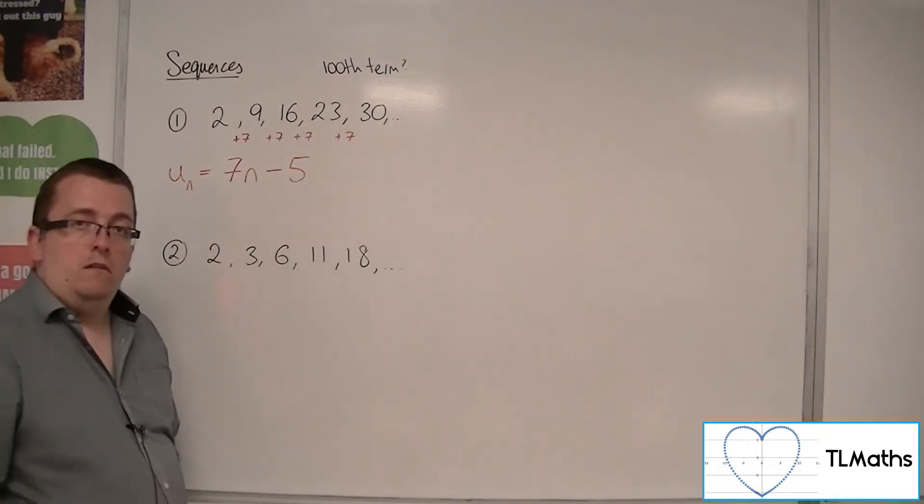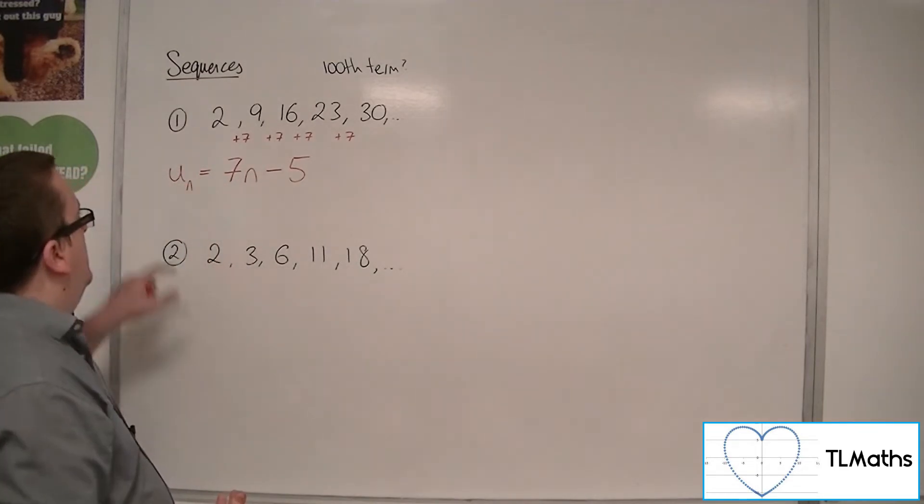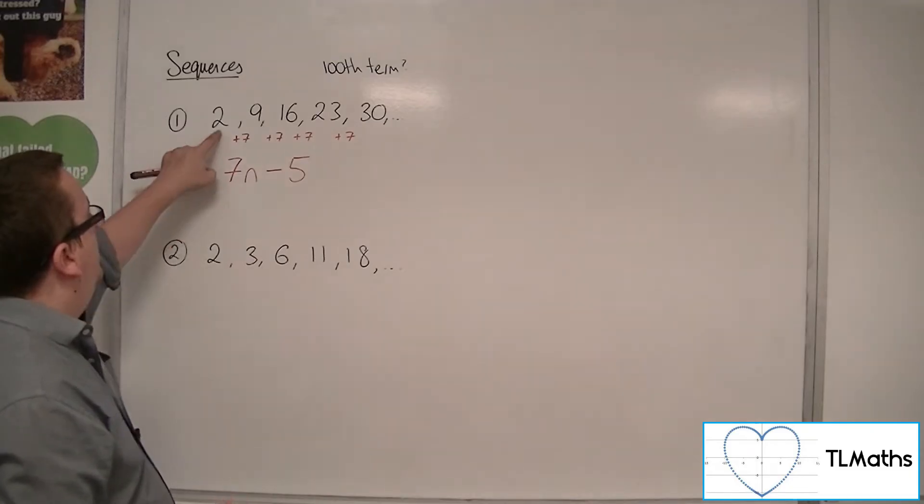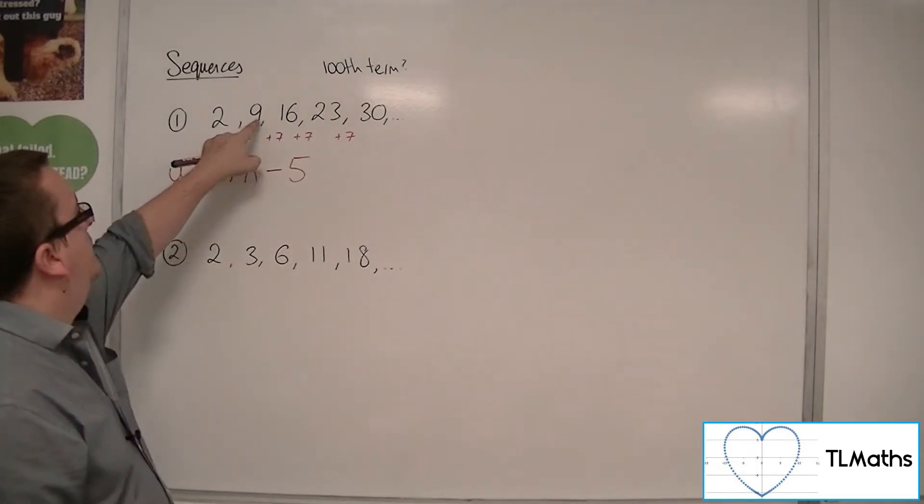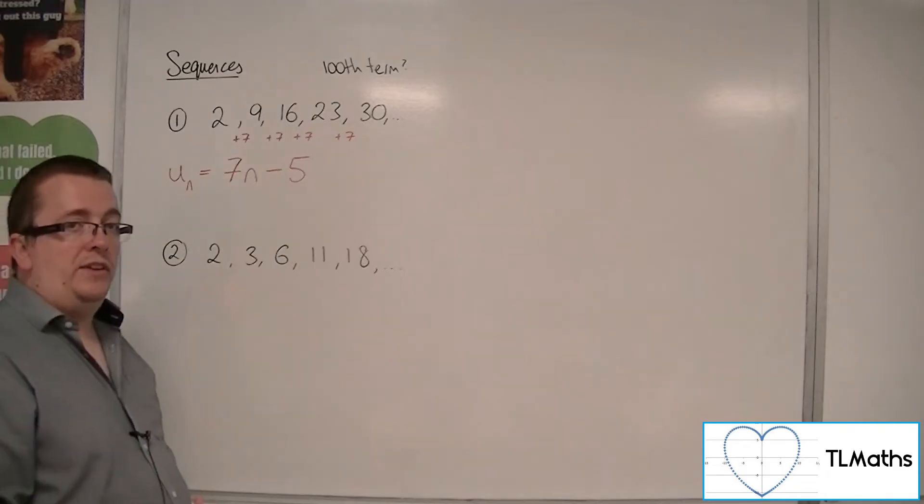And we could write down the nth term as being un. So u1 is 2, u2 is 9, u3 is 16, etc.